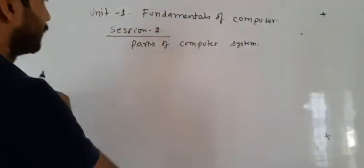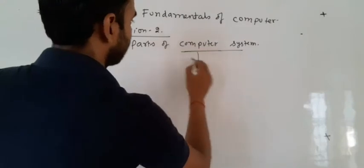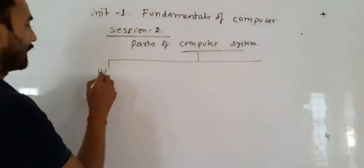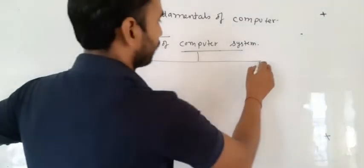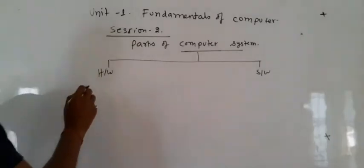In the previous chapter, we learned computer systems are basically categorized into two categories. The first category is called hardware and the second category is called software.